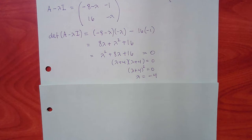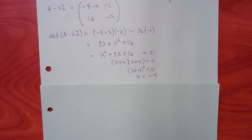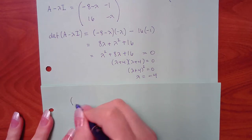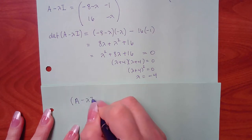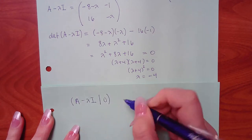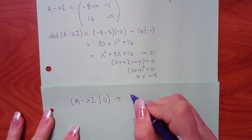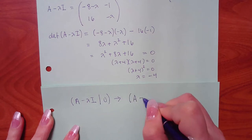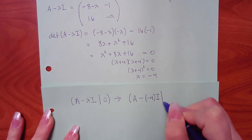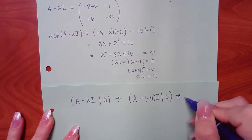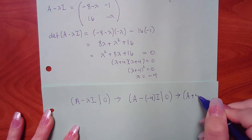With one lambda found, we need to find the K vector that goes with it by solving A minus lambda I equal to zero. With lambda equal to negative 4, that becomes A minus (negative 4)I, which is the same as A plus 4I.